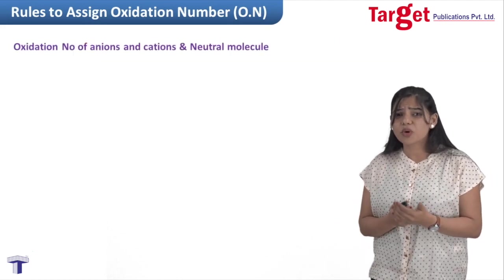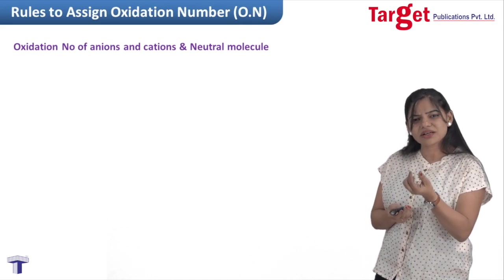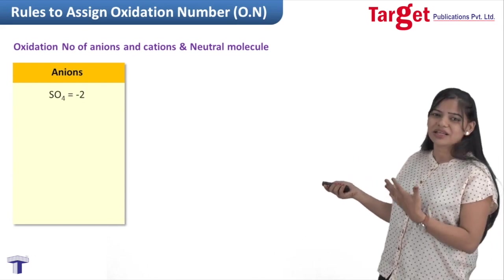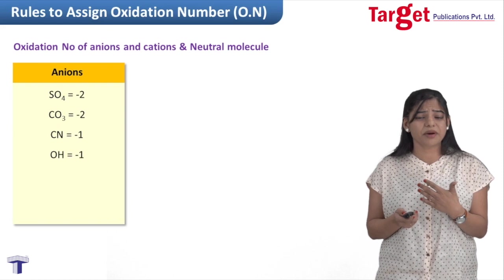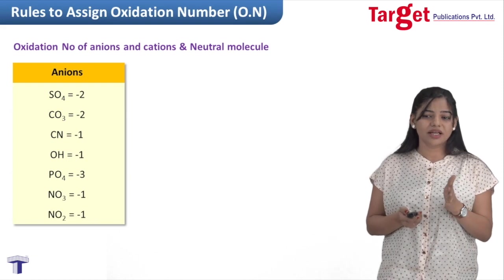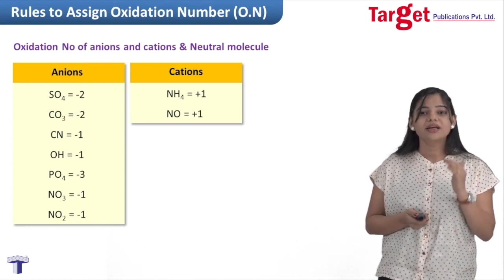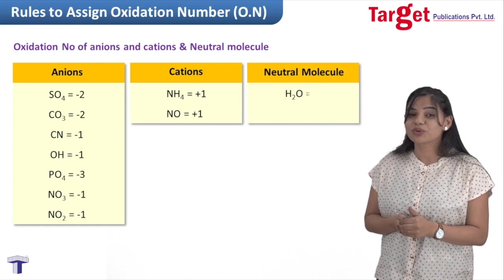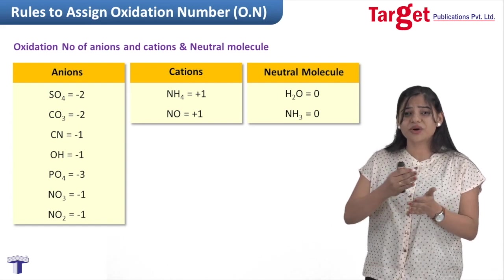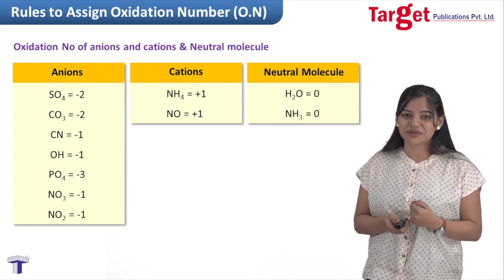There are a few more species whose oxidation numbers you should remember, especially for complex compounds. Common anions: sulfate SO₄²⁻, carbonate CO₃²⁻, cyanide CN⁻, hydroxide OH⁻, phosphate PO₄³⁻, nitrate NO₃⁻, and nitrite NO₂⁻ are all −1 or −2 or −3 as indicated. Common cations: NH₄⁺ is +1 and NO⁺ is +1. Neutral molecules: water H₂O is 0 and ammonia NH₃ is 0. I think it is now clear how to assign oxidation numbers. In our next modules, we will learn examples of oxidation number calculations.